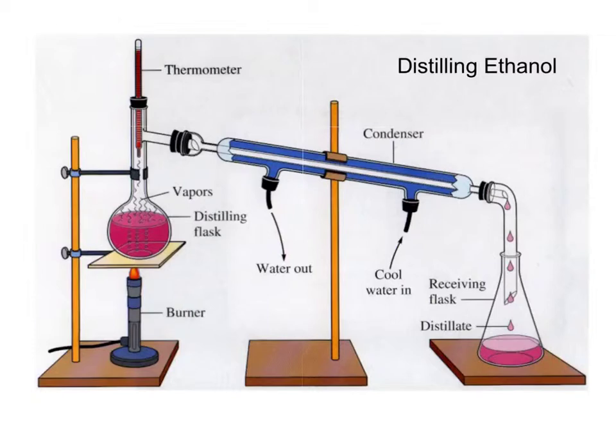So we have a Bunsen burner, and here is our distilling flask with our glucose solution ethanol mix. And when we heat the water and ethanol with that Bunsen burner, what we see is that the ethanol is the first to evaporate.